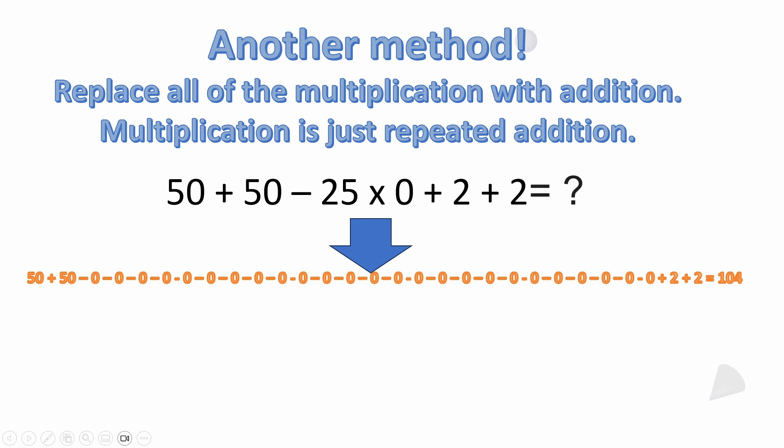The reason here is just to drive home the fact that multiplication is just repeated addition. So I can replace all of the multiplication with addition. If I say I'm going to give you 25 zeros, what does that mean? 0 times 25 or 25 times 0 is still 0.